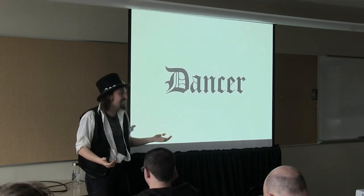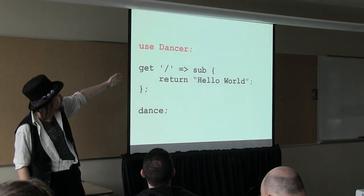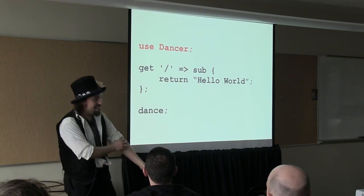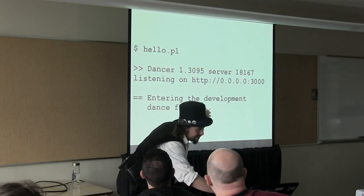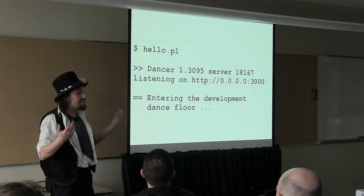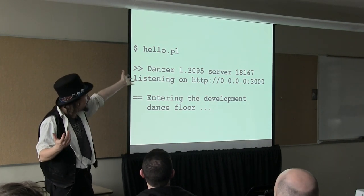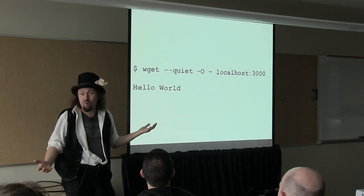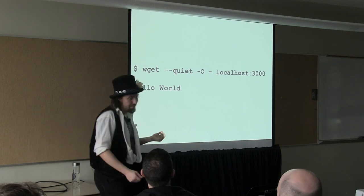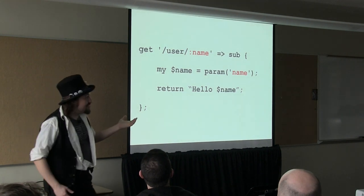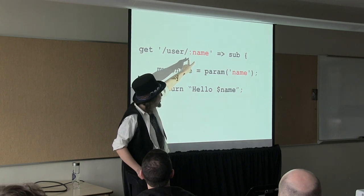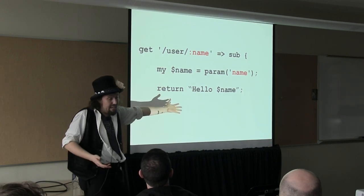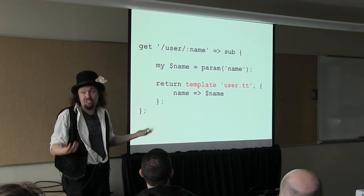There's a system which lets me do that — it's called Dancer. This is hello world in Dancer: 'use Dancer; get / { return "hello world" }; dance;' — that's all you have to do. 'dance' says I'm done, start the server. How do I run it? I just run it — hello.pl. It starts up with its own little development server so you don't have to worry about installing it in some other system. It's running on port 3000, entering the development dance floor. Then if I run wget against it, it gives me back 'hello world' — exactly what I want. Can we make it more fancy? Absolutely. You can say if I get /user/ followed by a label, then that label becomes a parameter. So if you go to /user/pjf, it says 'hello pjf'.